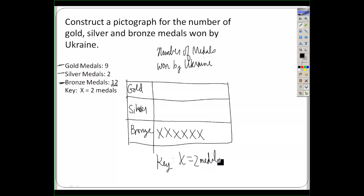For silver, there are only 2 silver medals, so I'm going to put just one x, because one x means 2 metals. For gold medals, there are 9, so I put x's for 2, 4, 6, 8 — but I only need one more, so I write half an x. Now I have a good-looking pictograph with a title, column labels, pictures, and a key.